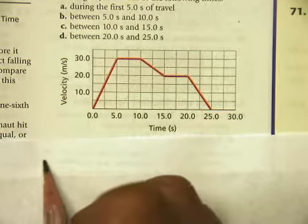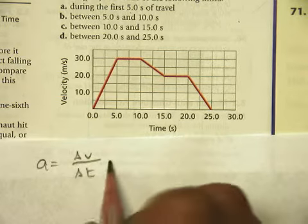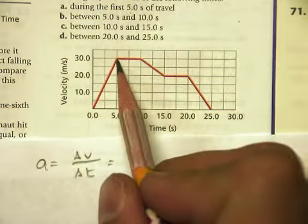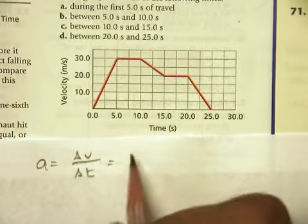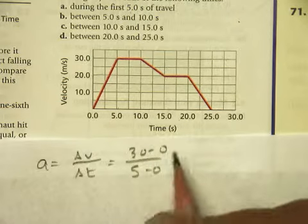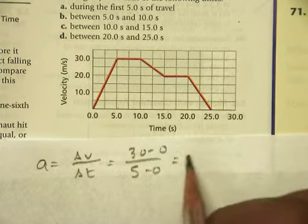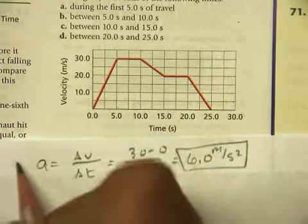Remember that acceleration is the change in velocity over the change in time. My velocity changes from VF minus VI, so 30 minus 0, and the time is 5 minus 0. So 30 divided by 5 is 6. So 6.0 meters per second squared for part A.